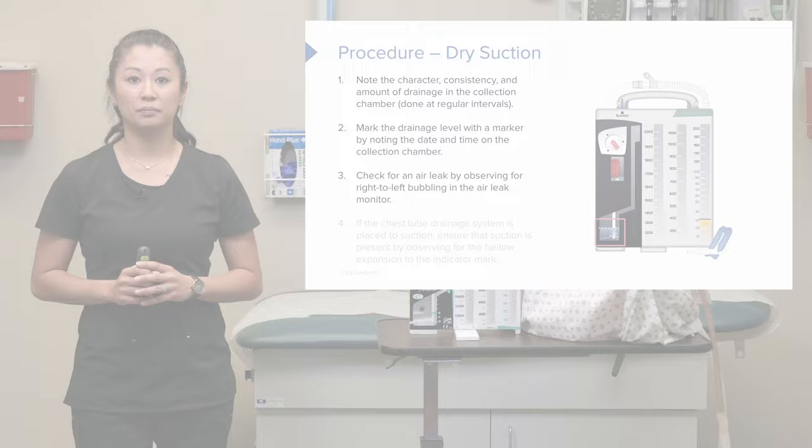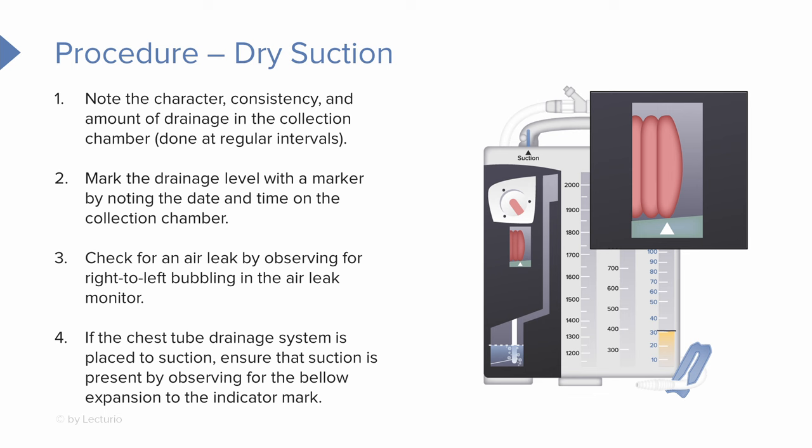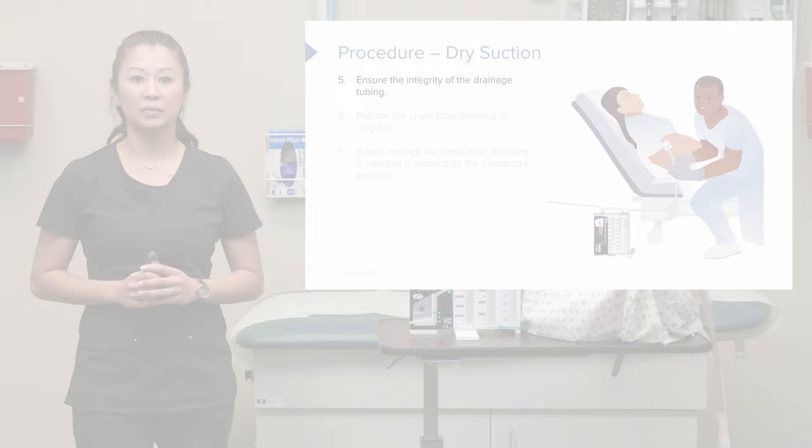With dry suction, this is where it differs. The dry system has a specific controlled setting — like negative 10 or negative 20 — and it also has a bellow. We want to make sure suction is working properly by checking that bellow; we want it at the indicator level or even a little past. Make sure you check this when dry suctioning is occurring. Also check the integrity of the drainage tubing and make sure it's free of kinks.